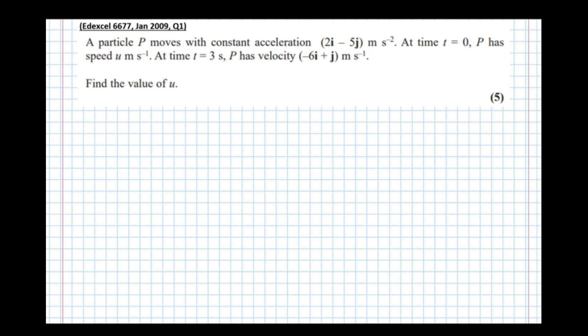A particle P moves with constant acceleration (2i - 5j) m s⁻². At time t = 0, P has speed u meters per second. At time t = 3 s, P has velocity (-6i + j) m s⁻¹. Find the value of u.